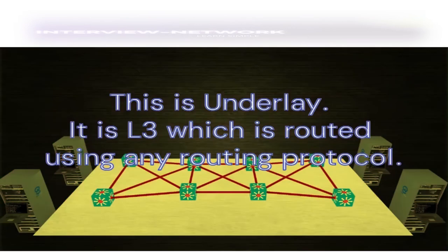As you can see, the underlay is L3, which is routed using any routing protocol. The underlay refers to your physical structure — your physical devices and physical network — where your devices actually sit and communicate with each other using routing protocols like OSPF, BGP, or EIGRP. On top of the underlay we have the overlay, which is like...